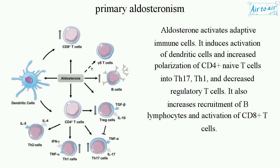Aldosterone activates adaptive immune cells. It induces activation of dendritic cells and increased polarization of CD4+ naive T-cells into Th17 and Th1 cells, while decreasing regulatory T-cells. It also increases recruitment of B lymphocytes and activation of CD8+ T-cells.